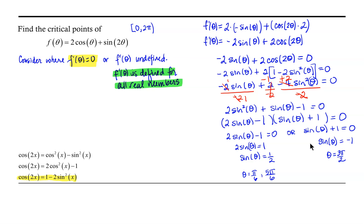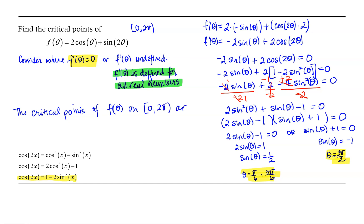So we have 3 critical points. The critical points of f of theta on the interval from 0 to 2 pi are theta equals pi over 6, 5 pi over 6, and 3 pi over 2.